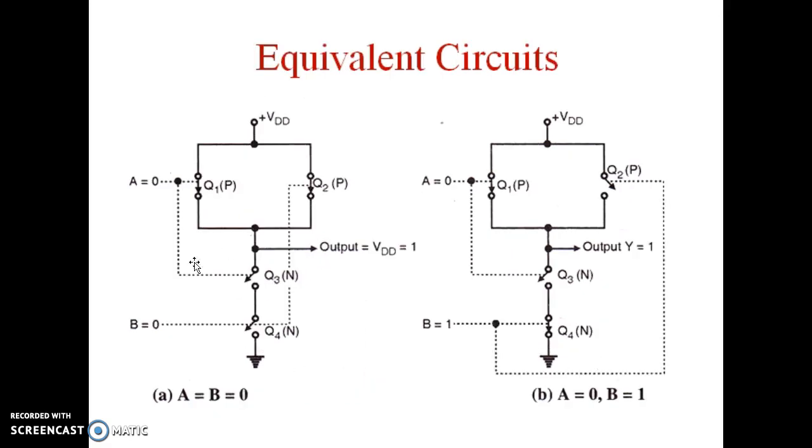We will see here for input 0, 0, as both the inputs are 0, PMOS works as closed switch but NMOS works as open switch. So due to this closed switch, output is equal to 1. For A equal to 0, B equal to 1, this one PMOS is on, other PMOS is off, one NMOS is off and other NMOS is on. So the output is again connected through here, output Y is equal to 1.